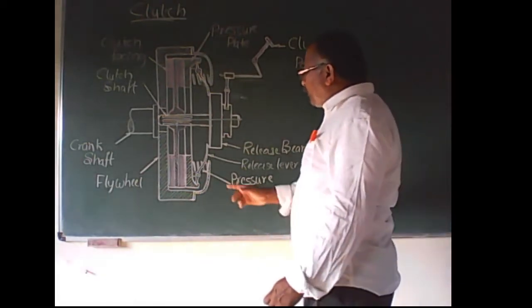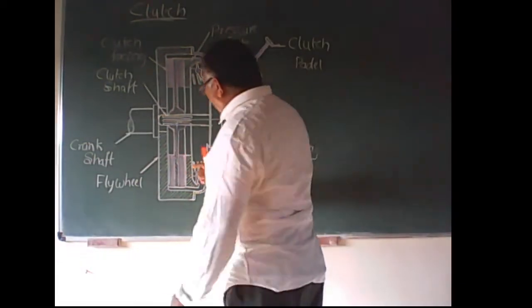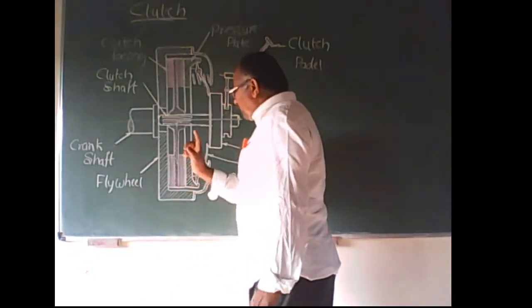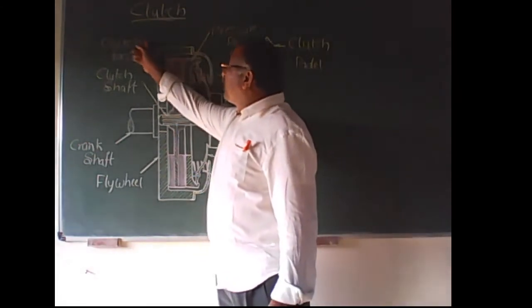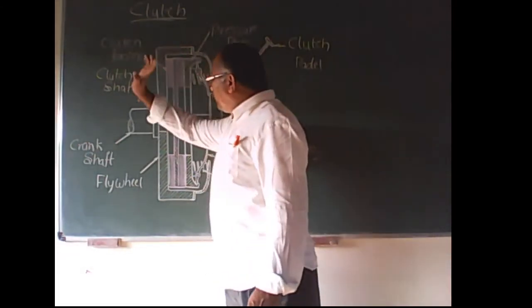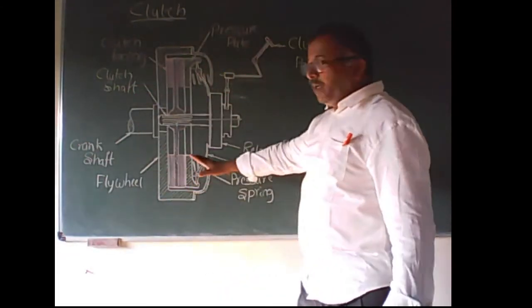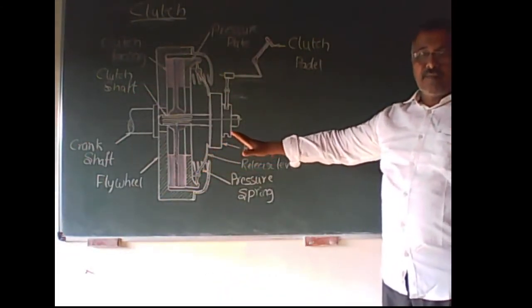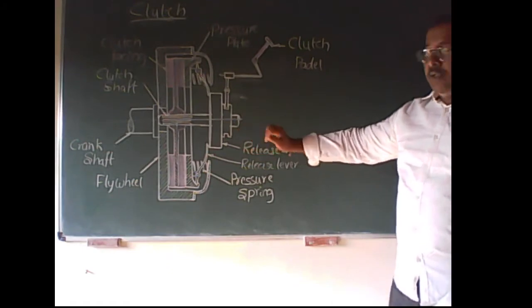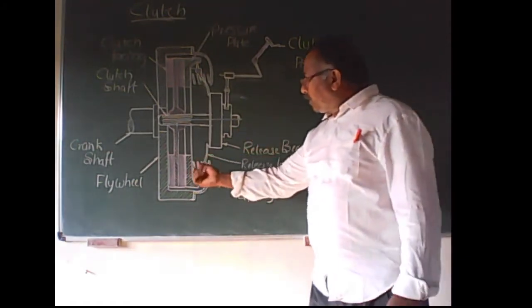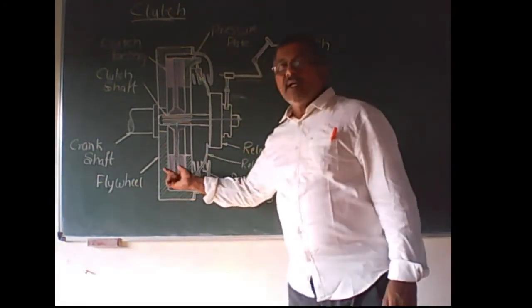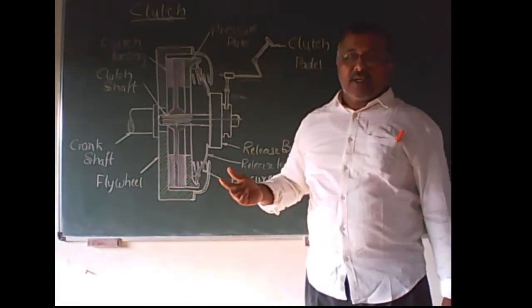This friction plate has friction linings or facings, which are normally made up of asbestos, though asbestos is not the only material used as a friction material.